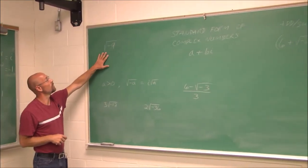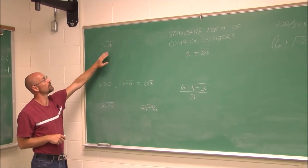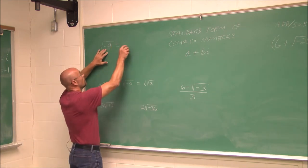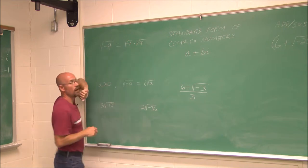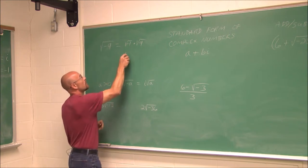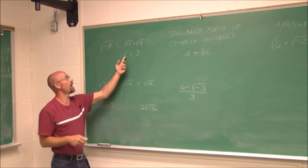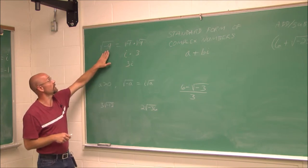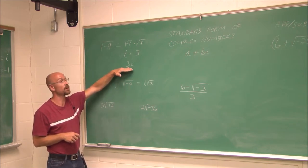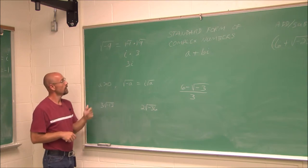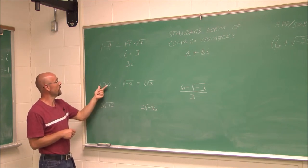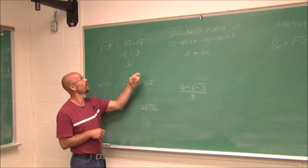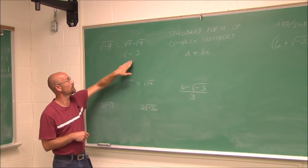Let's look at where we might have to simplify using i. If I had the square root of negative 9, I can always factor out the square root of negative 1. The square root of negative 1 is just i, and the square root of 9 is 3, so I have 3i. Generally we write the i at the end: 3i. This is a pure imaginary number because there is no real part. In general, if a is greater than 0, the square root of negative a simplifies to i times the square root of a.